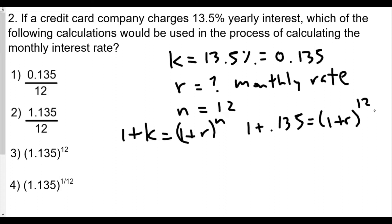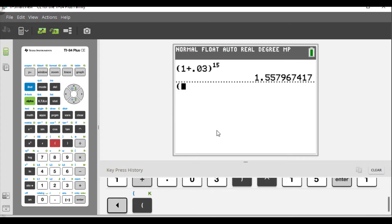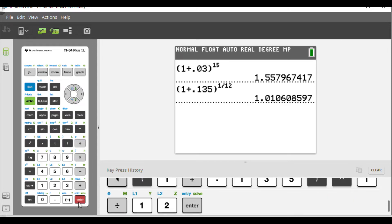And one of the things we know, when we want to find the base with the base raised to a particular exponent, we're going to raise both sides to the reciprocal of the exponent, so 1 over 12th power. And of course, now we bring out our graphing calculator again. And so we're going to take 1 plus 0.135, close parenthesis, raised to 1 over 12. And we get, in this case, 1.010608.